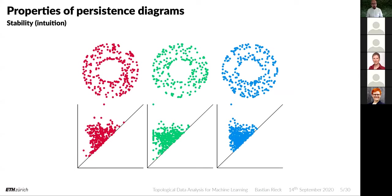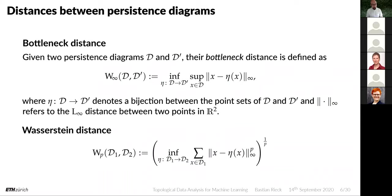The persistence diagram has certain nice properties. One is stability: if you calculate the persistent homology of two point clouds and modify them slightly with a small perturbation, the resulting persistence diagrams will look very similar. These three point cloud configurations look more or less the same, and you can see that all of them are clustered around the diagonal, even though the red one has a different width than the blue one.